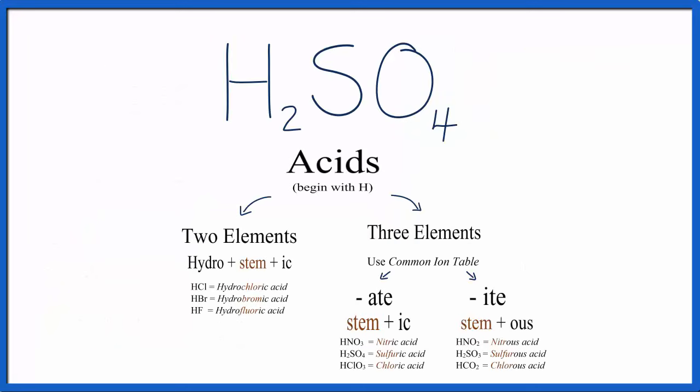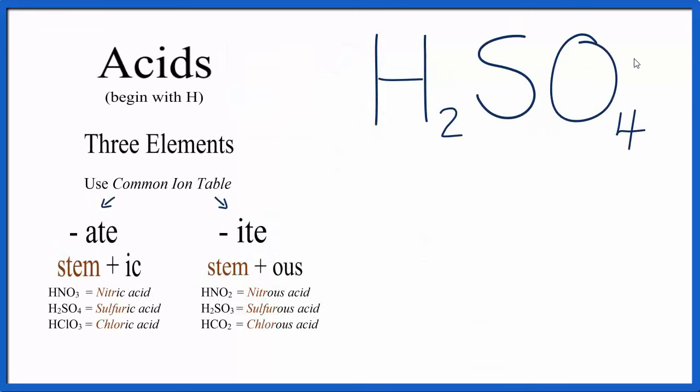So give this one a try, H2SO4. For H2SO4, we have one, two, three different elements. One of them is oxygen, so we have an oxyacid. And we use this part of our flowchart. We have our polyatomic ion here, this SO4, and we'll need to look on the common ion table. Since hydrogen is a +1, 2 times +1, we'll have a +2. The SO4 is going to be a 2-.